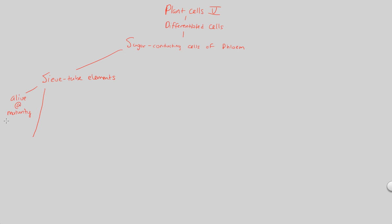Sieve tube elements are really the most simplified form of cell you can imagine — I like to think of them as the plant's version of a red blood cell. These cells have no nucleus, just like our red blood cells. They have no mitochondria, no ribosomes, and no large vacuole — sometimes called a tonoplast — that many plant cells use to hold water. So no nucleus, no mitochondria, no ribosomes, no large vacuole. We'll see why in just a second.